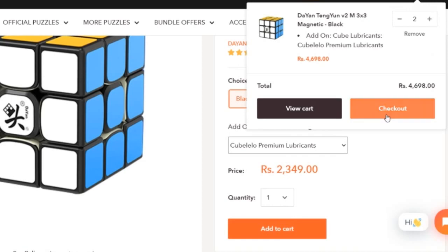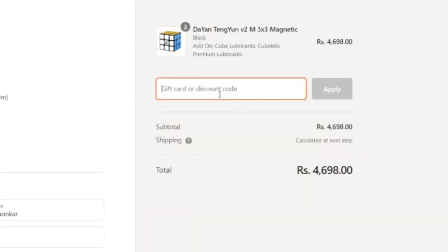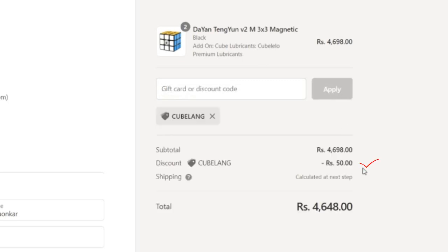You can go right now to Cubelelo.com and order your puzzles, and at the checkout you can use the code 'cubelang' to get 50% off your next order for any number of puzzles. So go and buy and happy cubing.